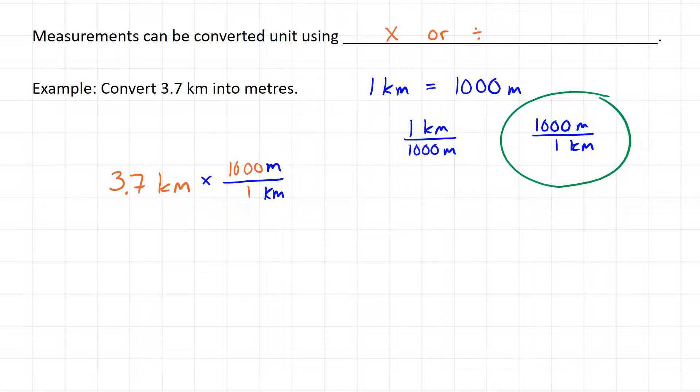What this does is get rid of our kilometers and change this measurement into meters. So all we have to do now is this calculation: 3.7 times 1,000, and we're left with 3,700 meters.